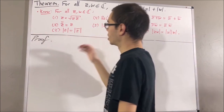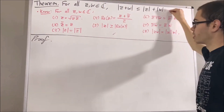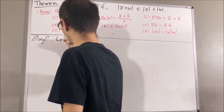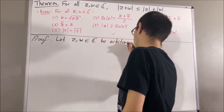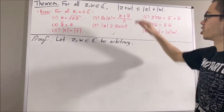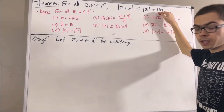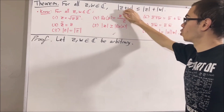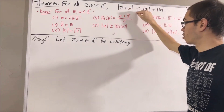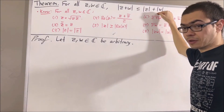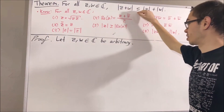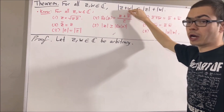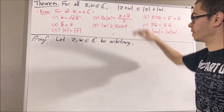Let's get into proving this theorem. We start by giving ourselves two arbitrary complex numbers z and w. The whole goal from here is to prove the inequality, and what we're actually going to show is that the square of |z + w| is less than or equal to the square of |z| + |w|, because from there it follows that |z + w| ≤ |z| + |w|. So let me start out by writing the square of |z + w|.